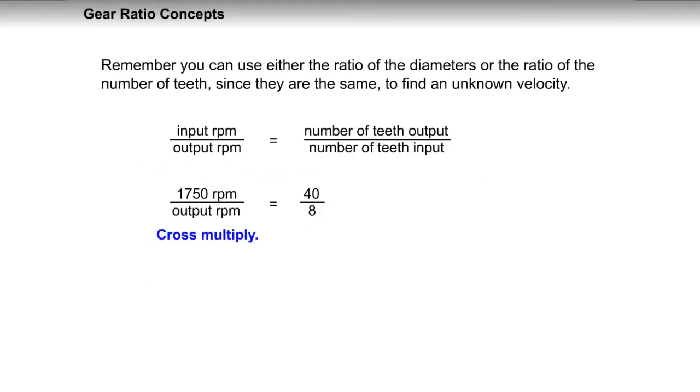Remember, you can use either the ratio of the diameters or the ratio of the number of teeth, since they are the same, to find an unknown velocity.